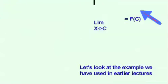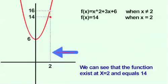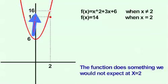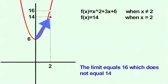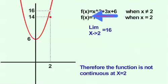Let's look at the example we've used in previous lectures. We can see that the function exists at x equals 2 and equals 14. However, the limit as x goes to 2 equals 16. The function does something we would not expect at x equals 2. The limit equals 16, which does not equal the function value of 14. Therefore, the function is not continuous at x equals 2.